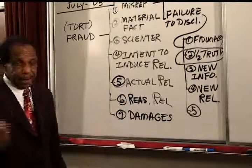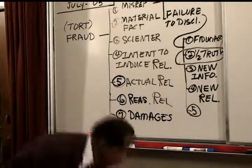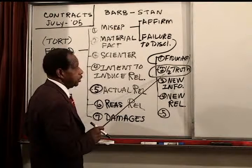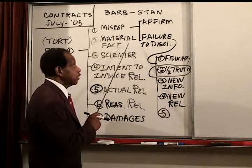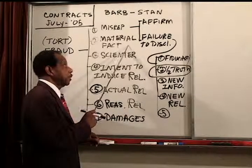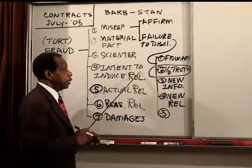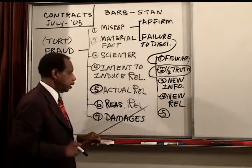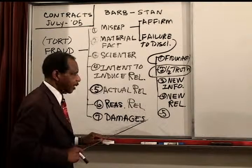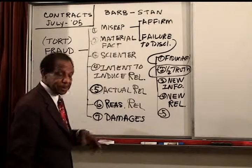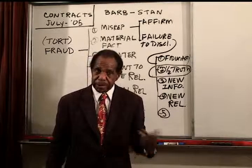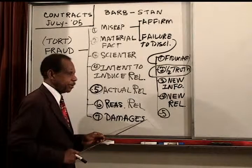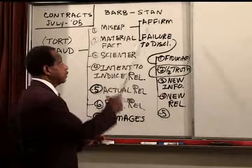In the Stan and Barb case, Barb misled Stan by not disclosing her intent to develop the property — that's the misrepresentation. It was material because Stan didn't want the land developed. Scienter: she knew she was lying. Intent to induce reliance: Barb certainly intended to induce Stan to rely. Stan did rely — actual reliance. It was reasonable for him to rely. Stan was damaged because his land will now be developed — an aesthetic damage, but still a damage. Barb committed fraud against Stan.